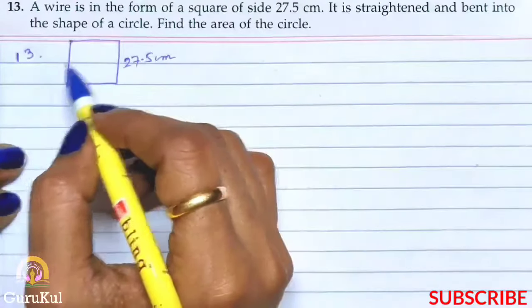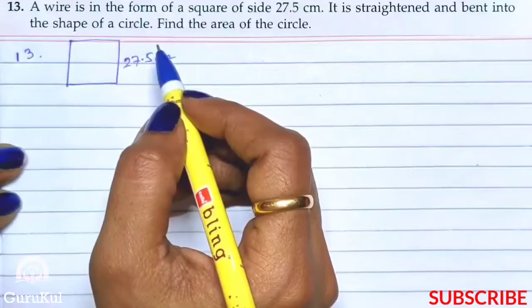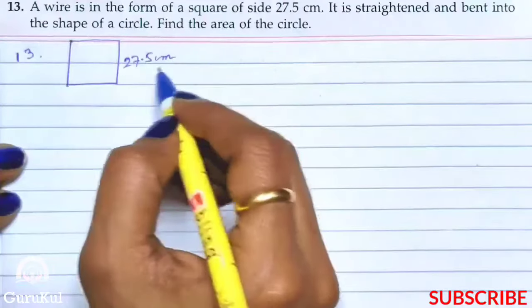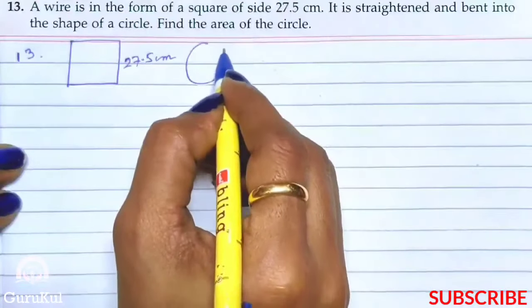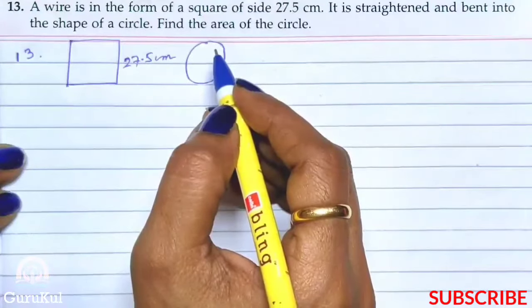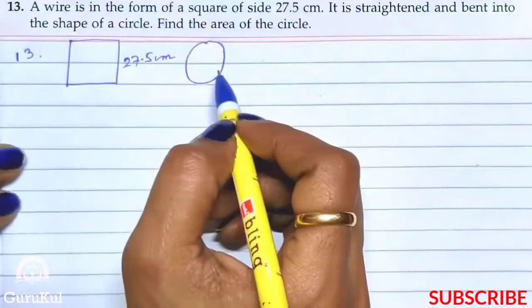Now this wire is straightened and bent into the shape of a circle. Now we need to find the area of the circle. So what did you understand from this?